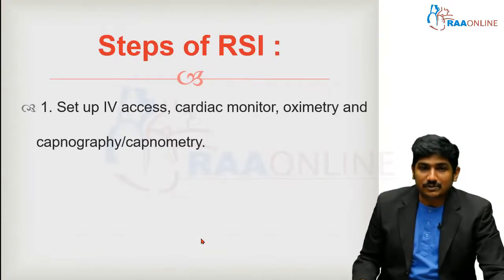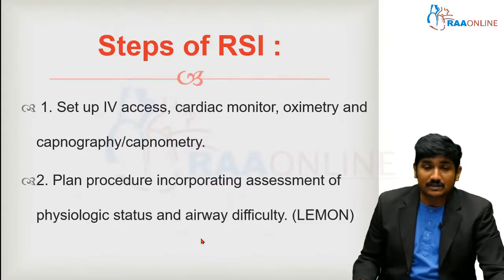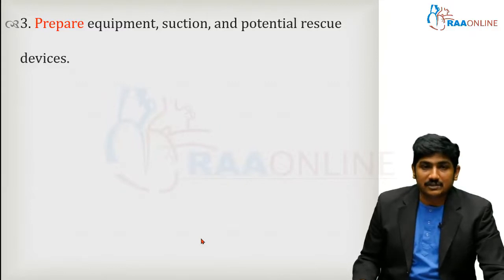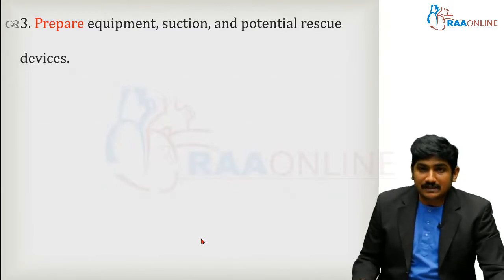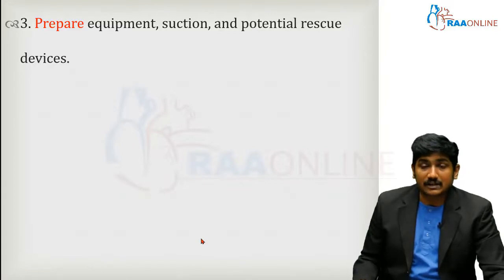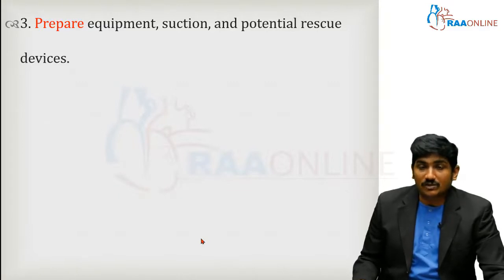Coming back to the steps of RSI: set up a good IV line, connect to monitors, and plan the procedure including airway assessment. Then comes preparation — get all equipment checked and ready. Make sure suction is working and connected to the wall mount, and always have rescue devices available. Because RSI uses not only a sedative but also a paralytic, you could end up in a 'cannot intubate, cannot ventilate' situation and lose the patient. Always have a plan B.